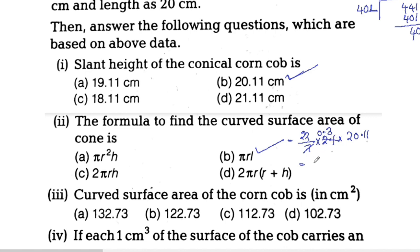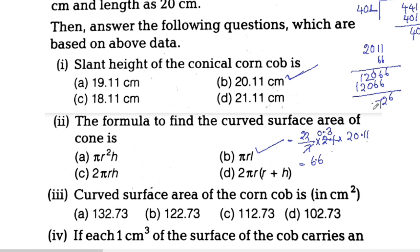Substituting: (22/7) × 2.1 × 20.11. Since 7 and 2.1 simplify — 2.1 divided by 7 gives 0.3 — we get 22 × 0.3 × 20.11, which equals 6.6 × 20.11. Working through the multiplication: 6.6 × 20.11 equals 132.726, approximately 132.73 cm².